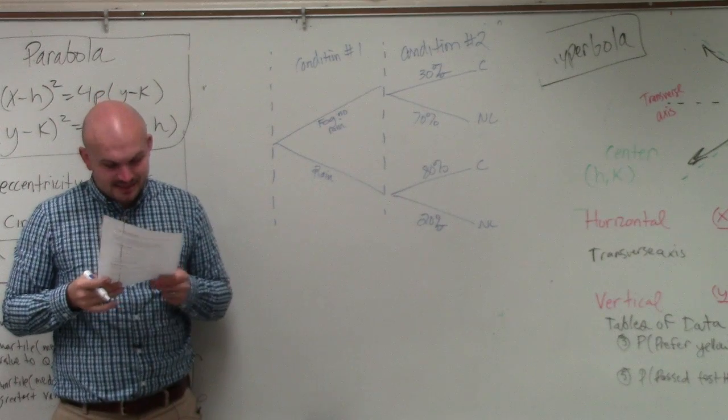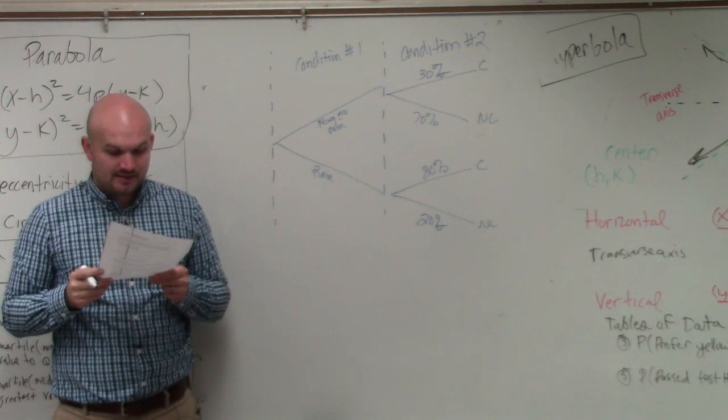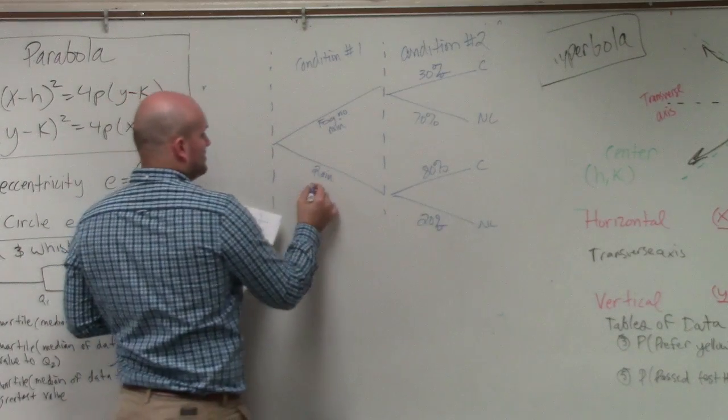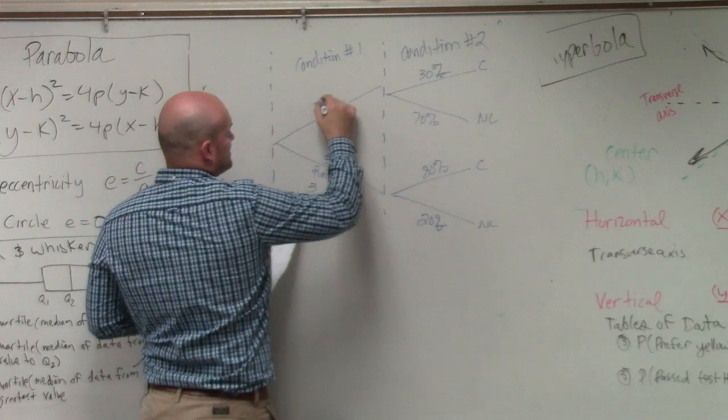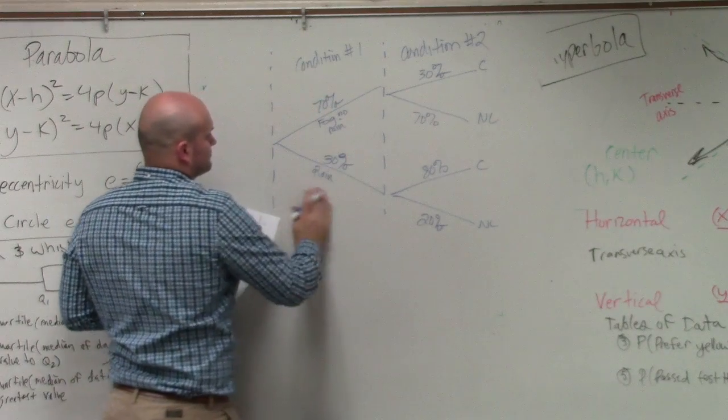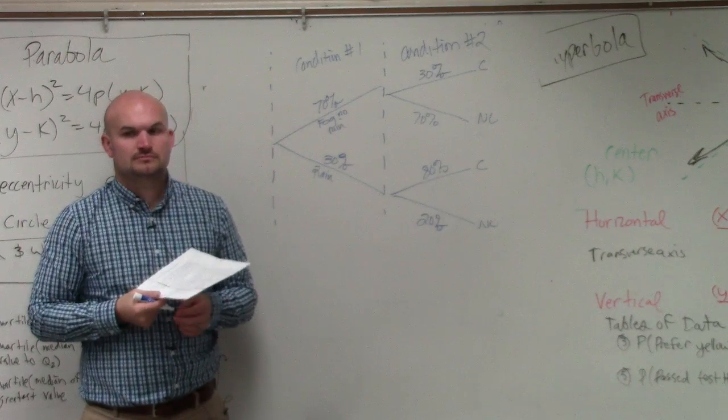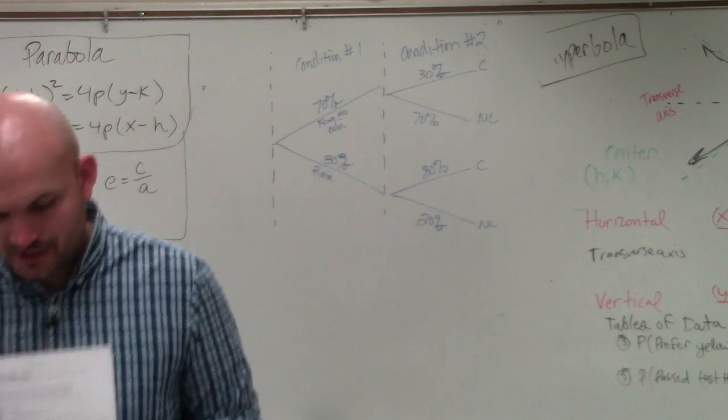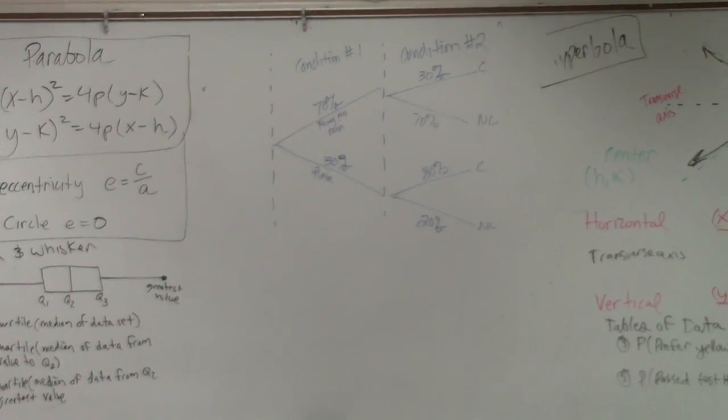Then the next sentence says there is a 70% chance of fog with no rain and a 30% chance of rain. So therefore we have 30% chance and a 70% chance. Cool? All right. So now, based on that information, we are going to answer questions. Would you guys prefer me to go through all of that?